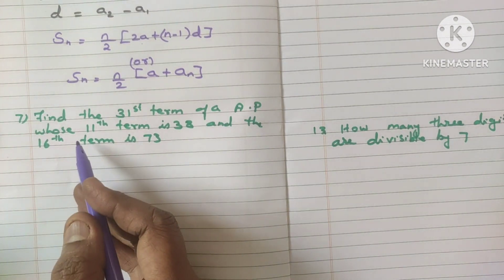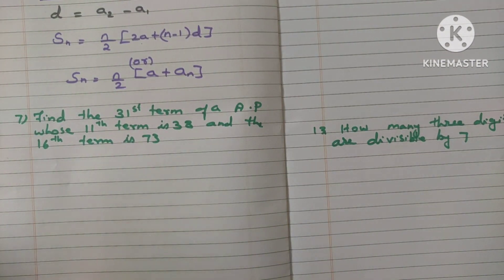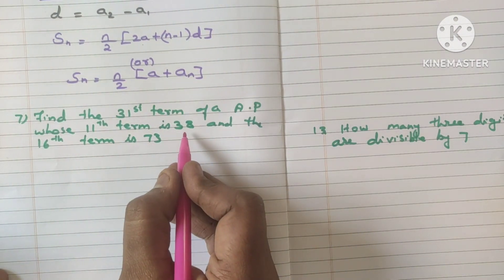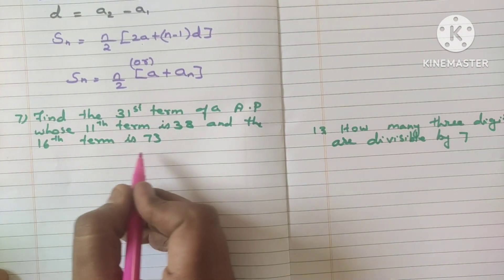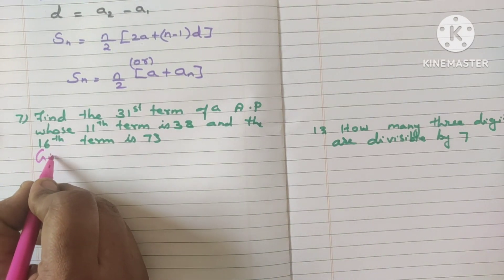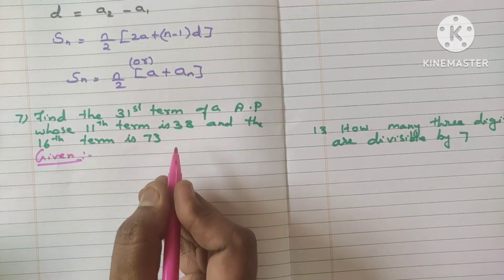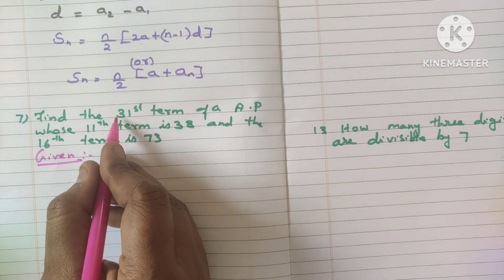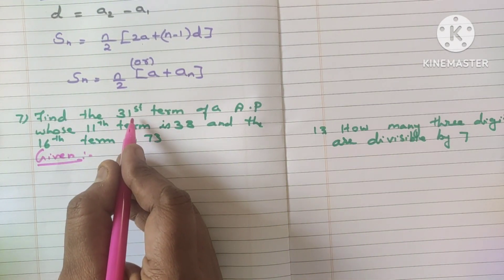Today's question: Find the 31st term of an AP whose 11th term is 38 and the 16th term is 73. So first, let me write the given. Given. What are the details given here? What are the clues?